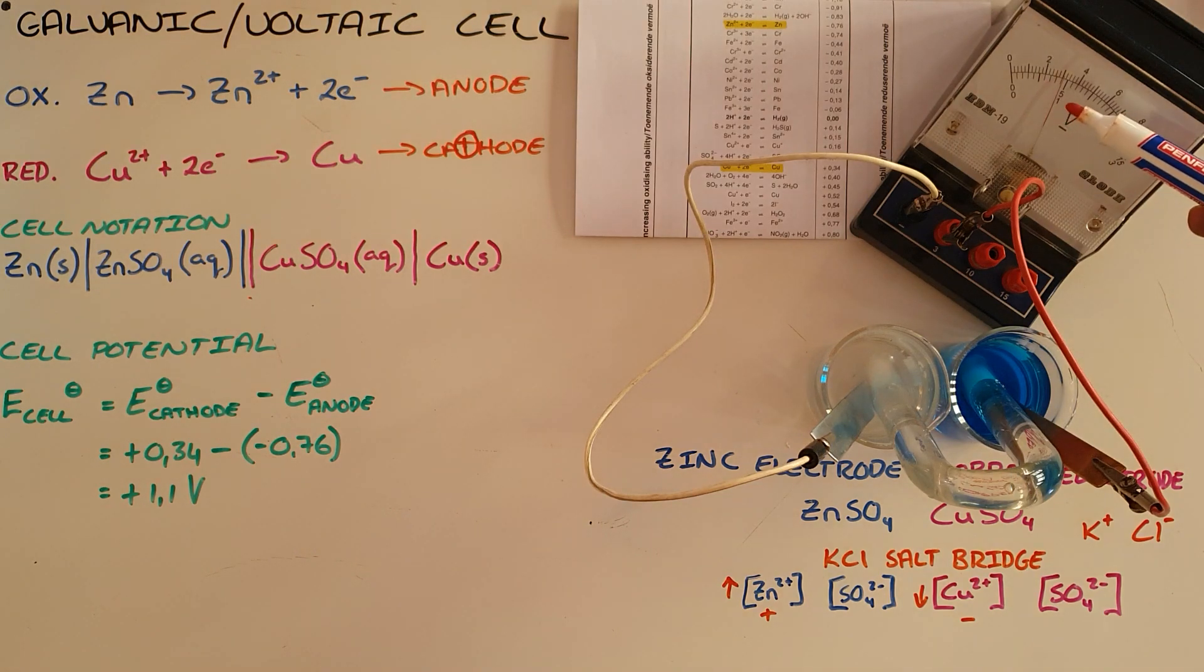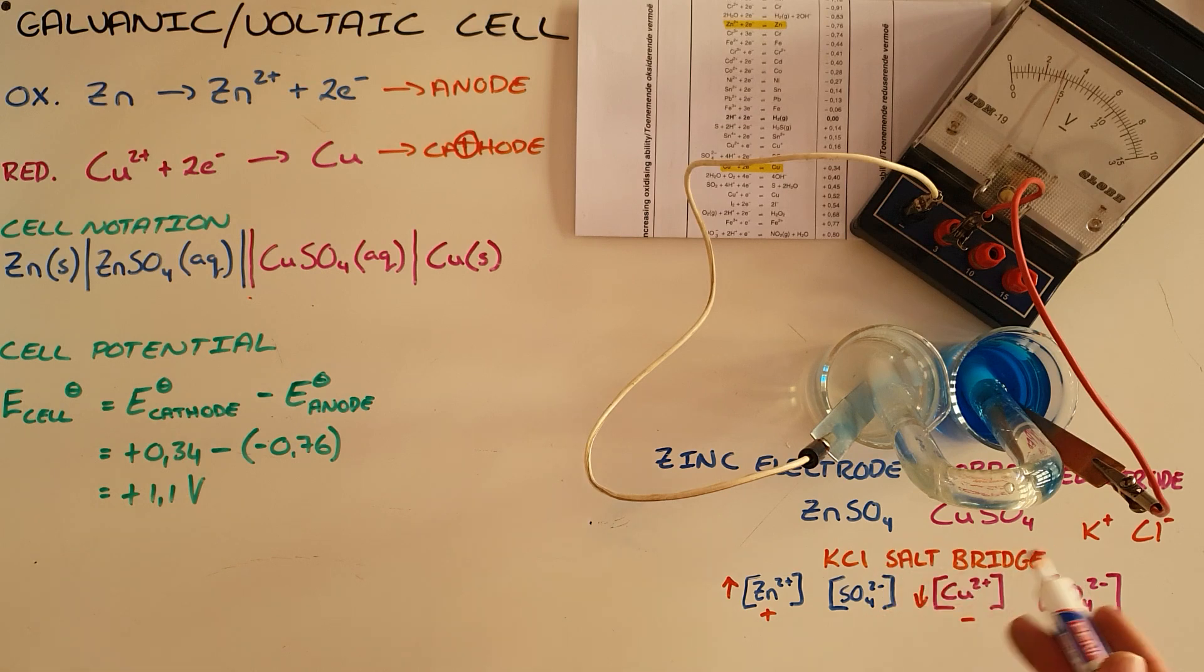As we can see on the voltmeter here, it is slightly below that. That would be mainly due to a change in concentration or the concentration being below what is considered a standard condition.